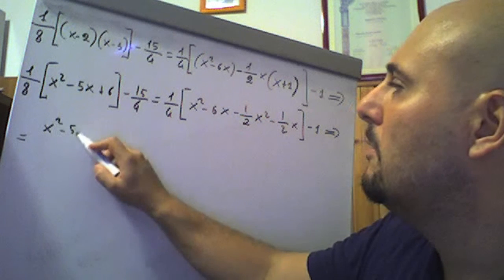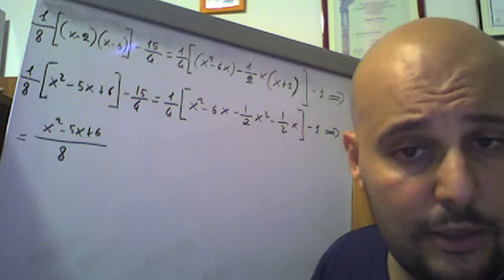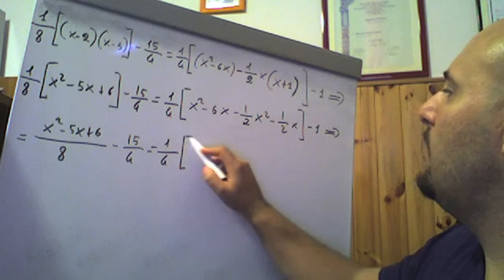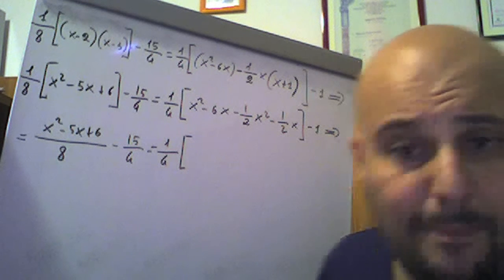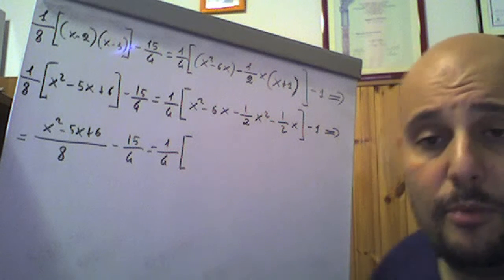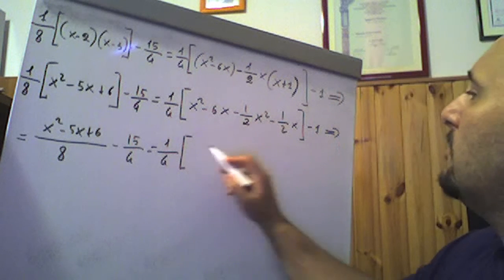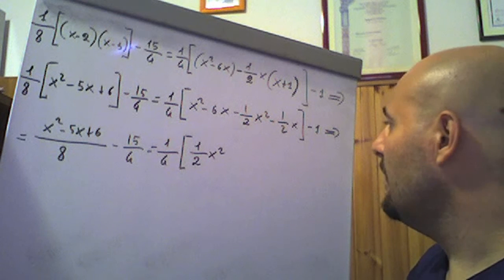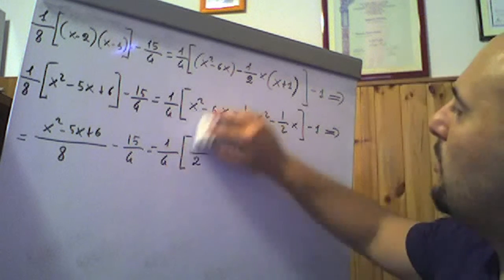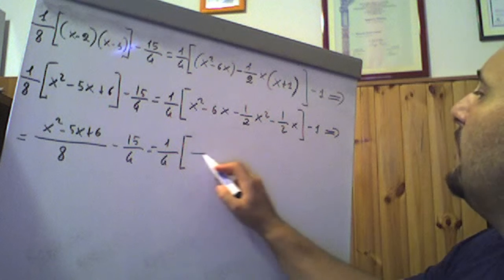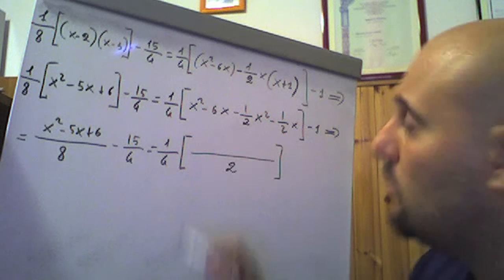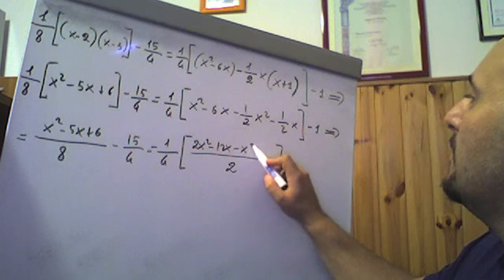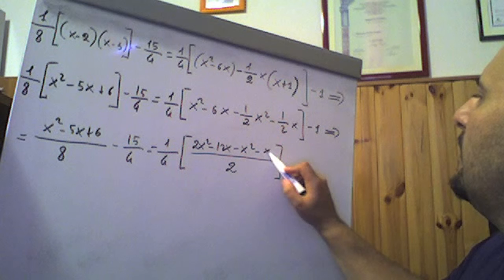Moltiplichiamo un ottavo per (x²-5x+6), scrivendo (x²-5x+6)/8, meno 15 quarti uguale. Un quarto moltiplica la quadra: dentro la quadra facciamo il minimo comune multiplo che è 2. 2 diviso 1, 2 per x² è 2x², 2 per -6x è -12x, 2 diviso 2 è 1 per -x² è -x², 2 diviso 2 è 1 per -x è -x. Chiusa la quadra, meno 1.